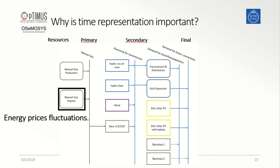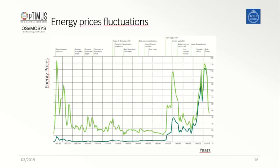Some variabilities can also be related to the fluctuation of primary energy fuel prices along several years or decades. This might affect the competitiveness of some primary resources in comparison to others on the long-term planning of the energy system. Here is an example of such fluctuations over the past 150 years.